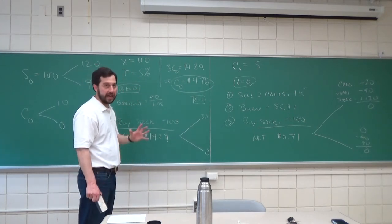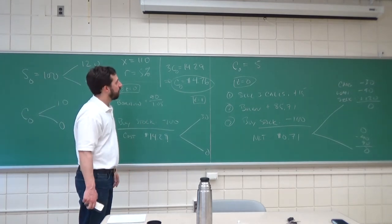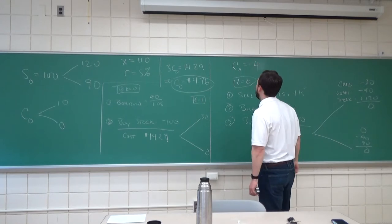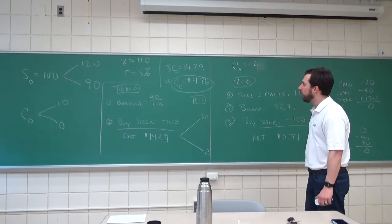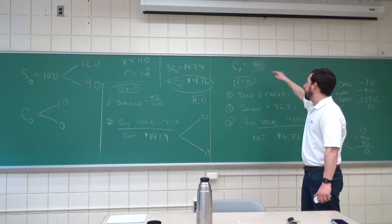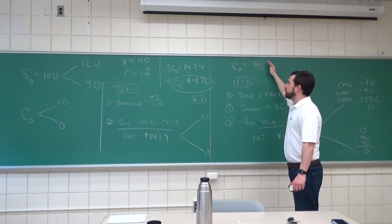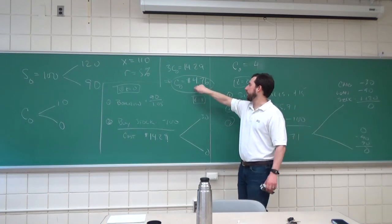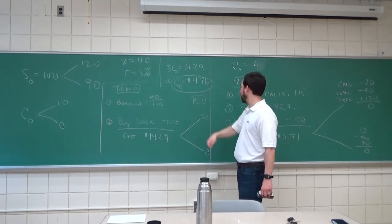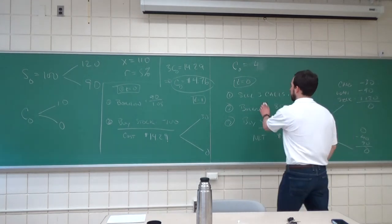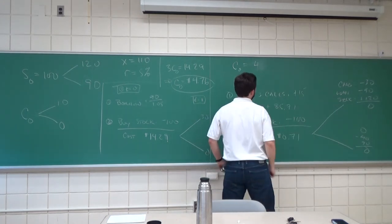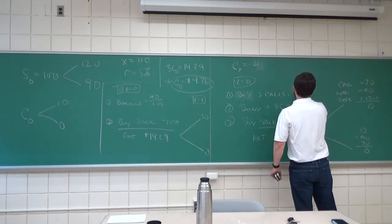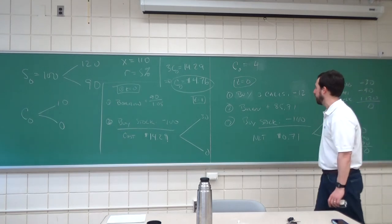In a real world adding in transaction costs. Now, we can similarly look at this and say, okay, well, what if the call price is 4? We know it should be 4.76, but if it's 4, then what we want to do is buy the call in the market at $4 and then sell the replicated call. So, we just switch this, right, buy three calls.